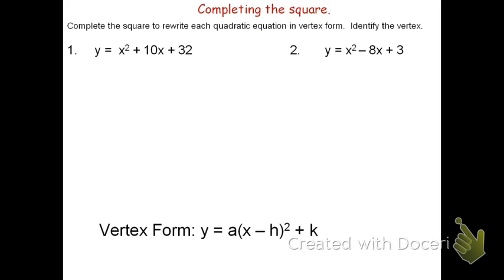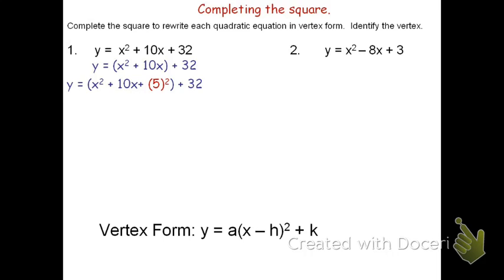To begin problem number one, we're going to group any term that has an x together. This would be the quantity x squared plus 10x, and then plus 32. We're now going to try to form the biggest perfect square we can using the x squared plus 10x. To do this, we're going to take the 10x and split it into two piles. Half of 10 is 5, so the form would be x squared plus 10x plus 5 squared.